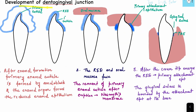Now, how does the dento-gingival junction develop? After the entire tooth formation has taken place, we have the inner enamel epithelium which had the ameloblasts. After complete tooth formation, these ameloblasts reduce themselves into a layer called the primary cuticle. So after enamel formation, the ameloblasts form what is called the primary enamel cuticle.